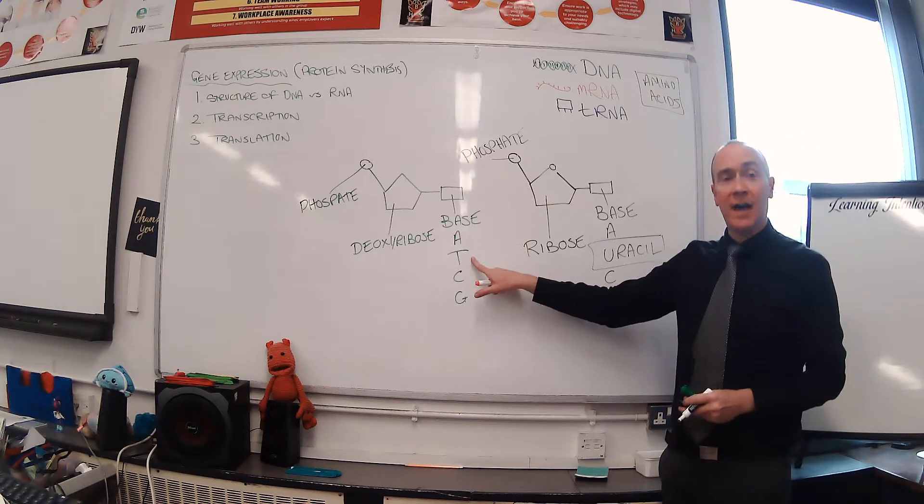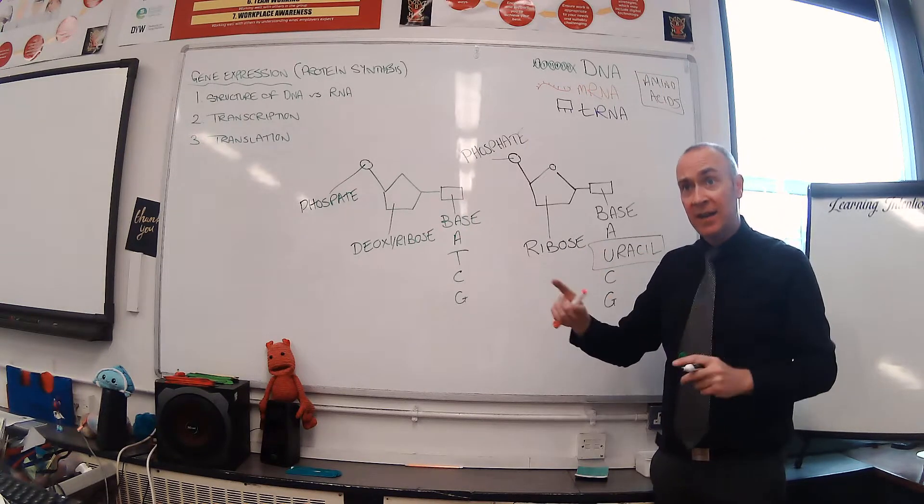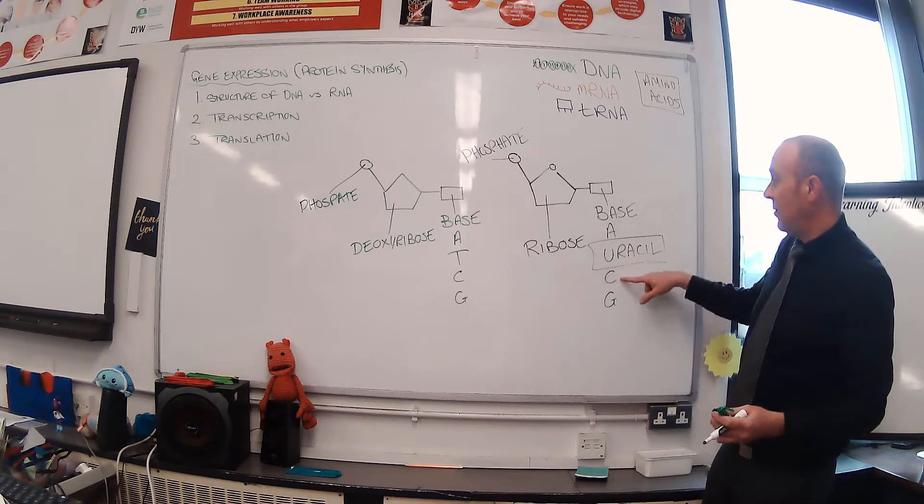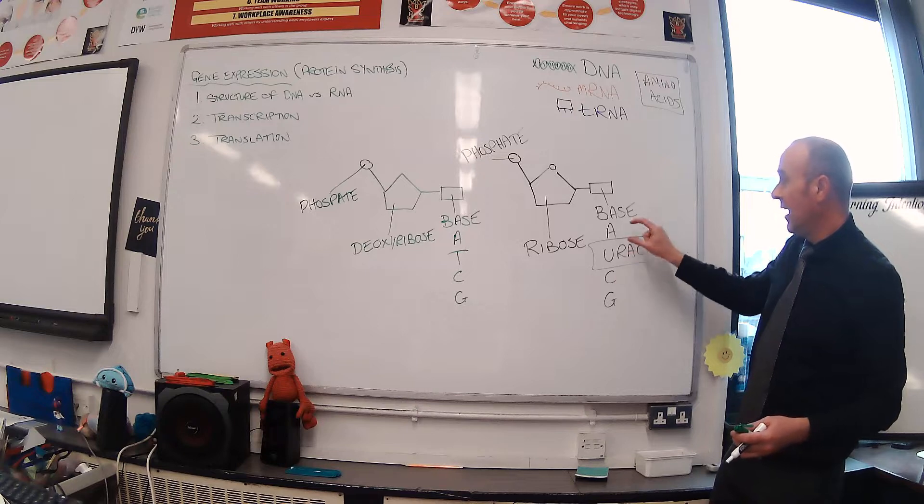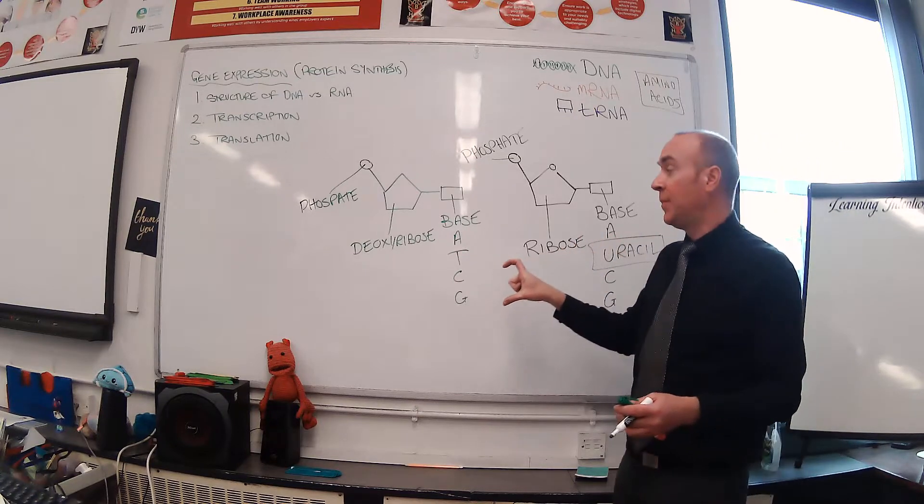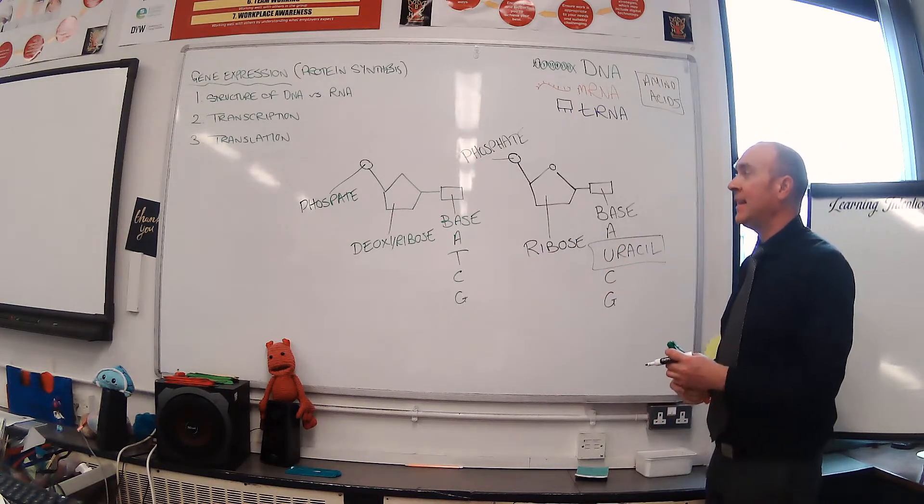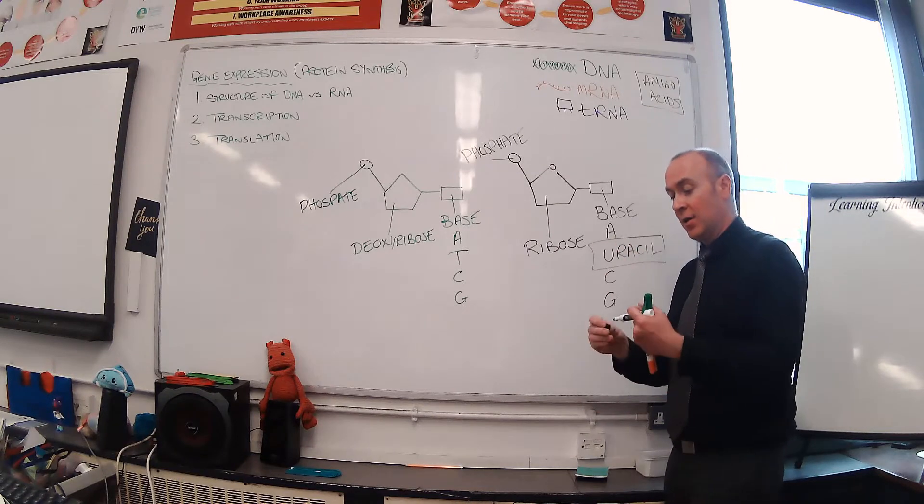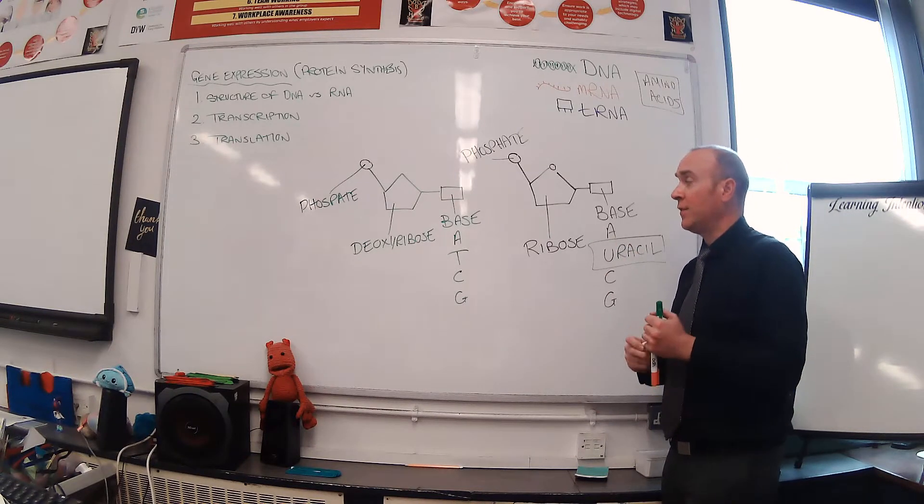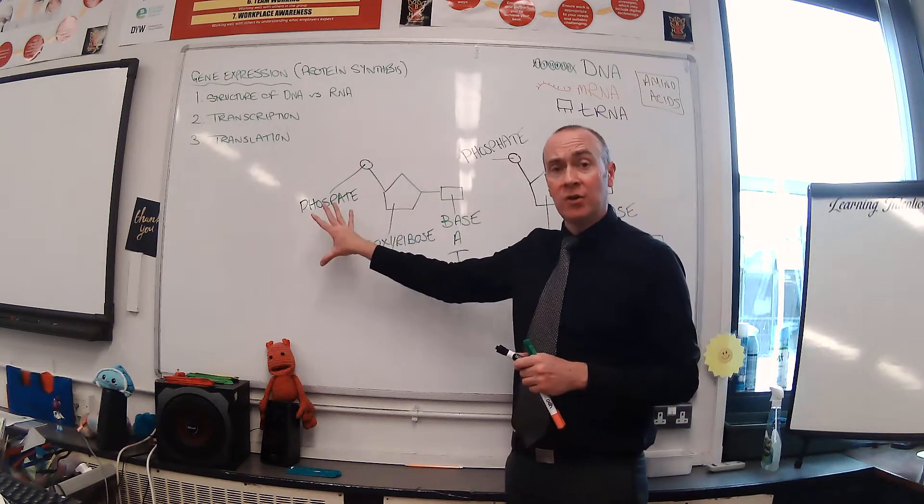The bases adenine, cytosine, and guanine are the same, but uracil is a new base which you find in RNA instead of thymine. In terms of the base pairing rule, cytosine and guanine pair together, and adenine and uracil pair together.